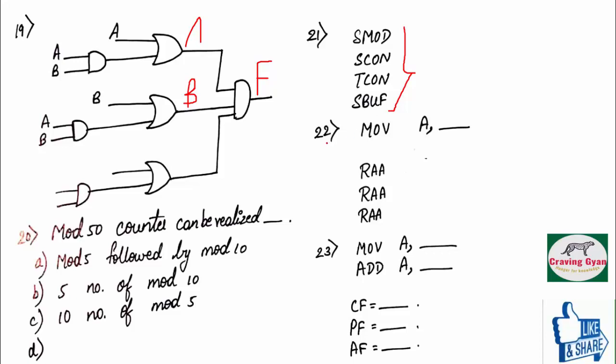Twenty-second question was based on microcontroller. They have given MUA, some data. And they have performed three times right shift through carry flag. You have to tell what is the value of accumulator at last.